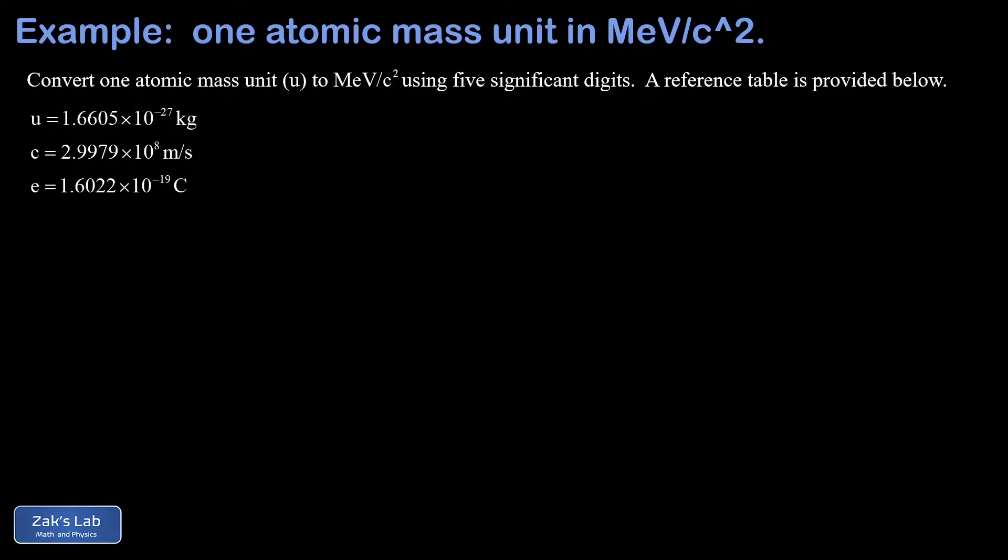In this video, the goal is to convert one atomic mass unit into these strange new units of mega electron volts per c squared. We're keeping five significant digits on everything, and we're given a reference table.